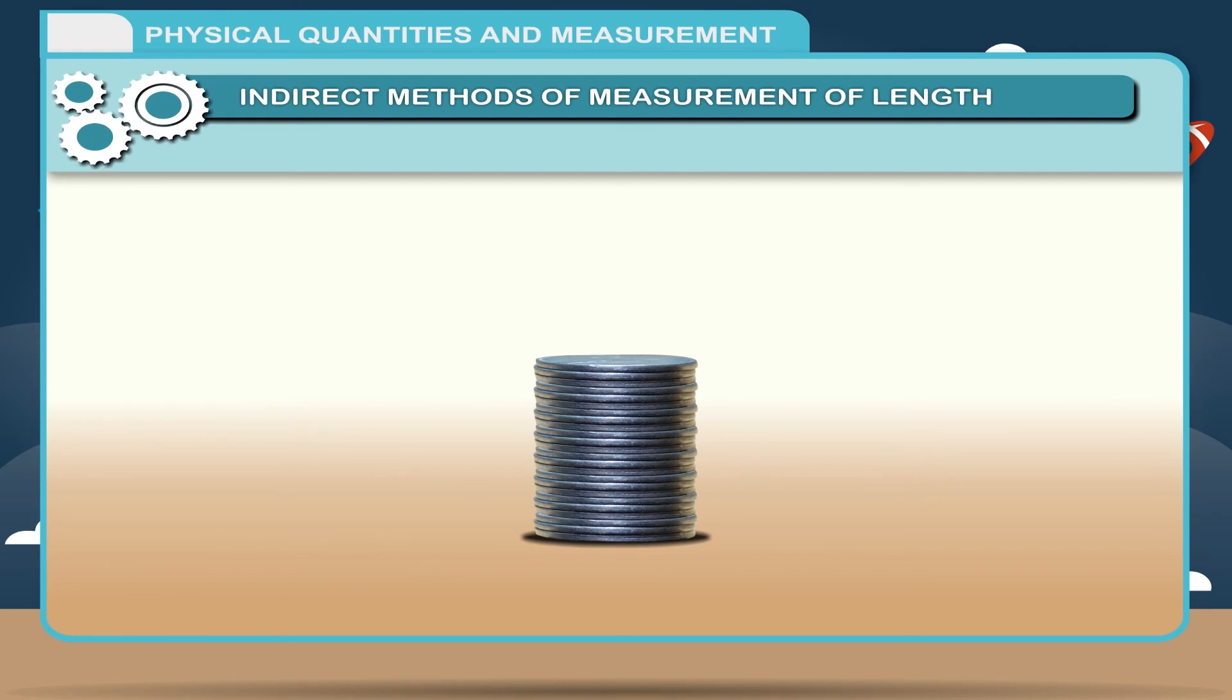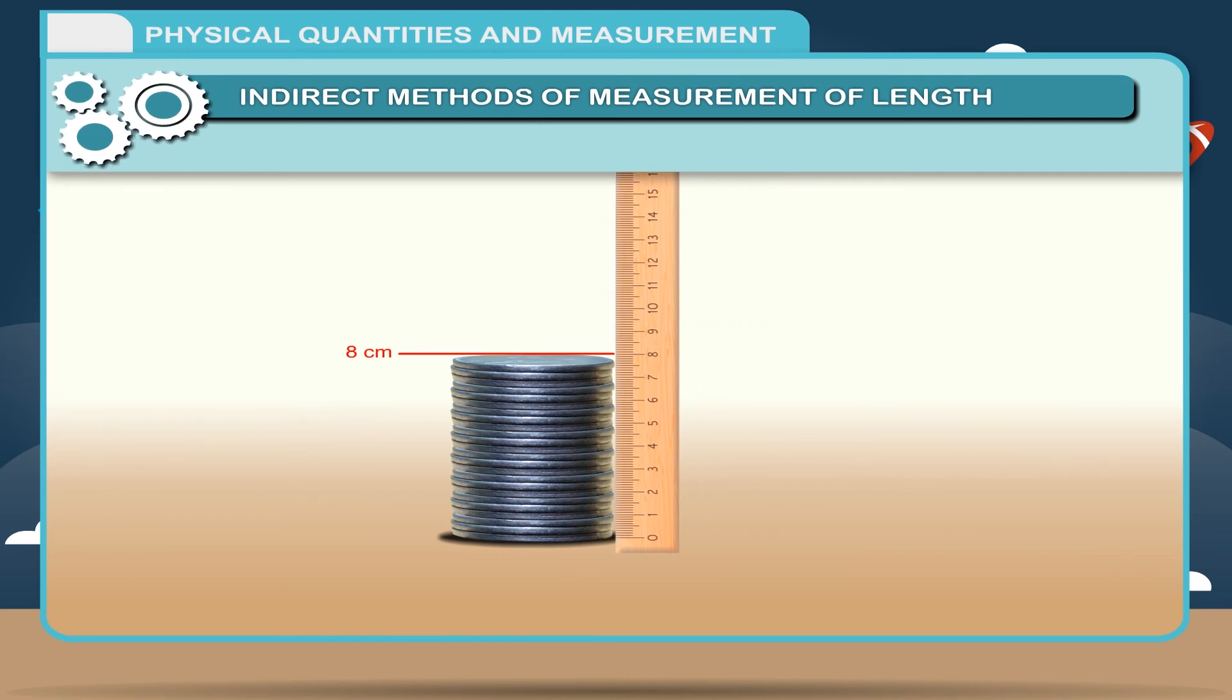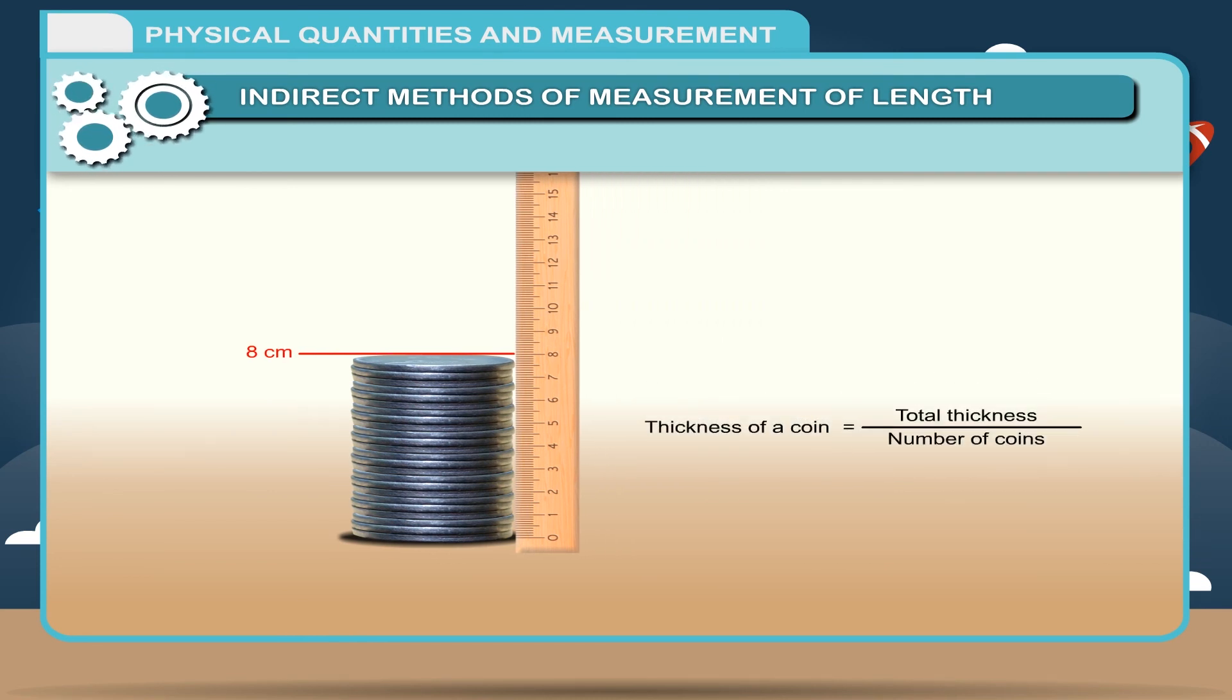The height of this stack of coins can easily be measured by a ruler placed vertically against it. To find the thickness of a single coin, divide the total thickness by the number of coins. So, thickness of a coin equals total thickness divided by number of coins.